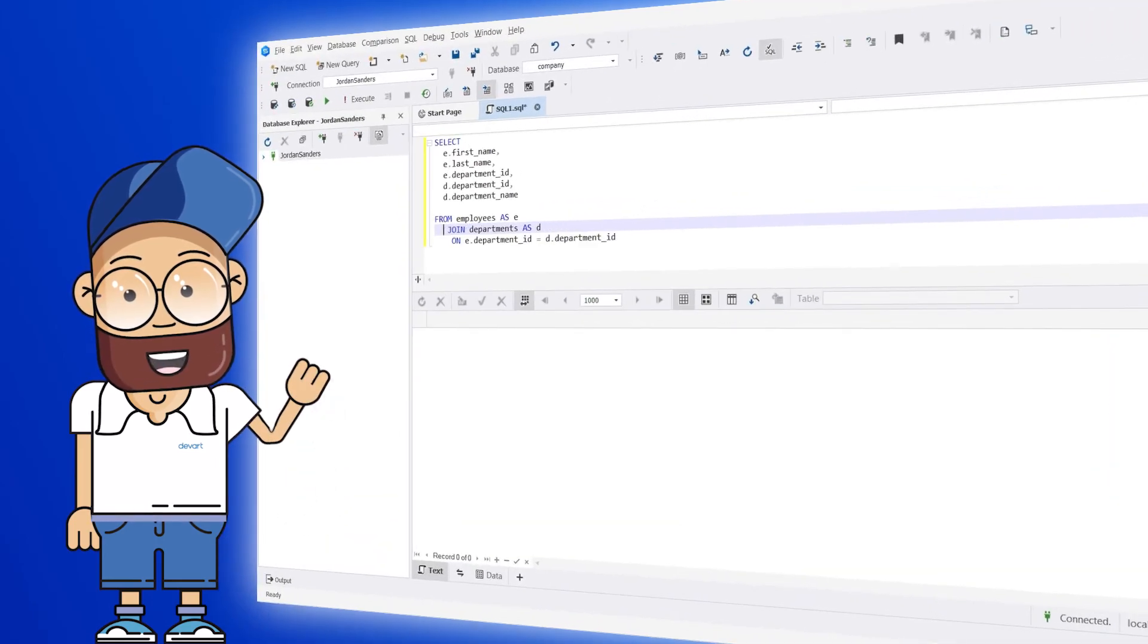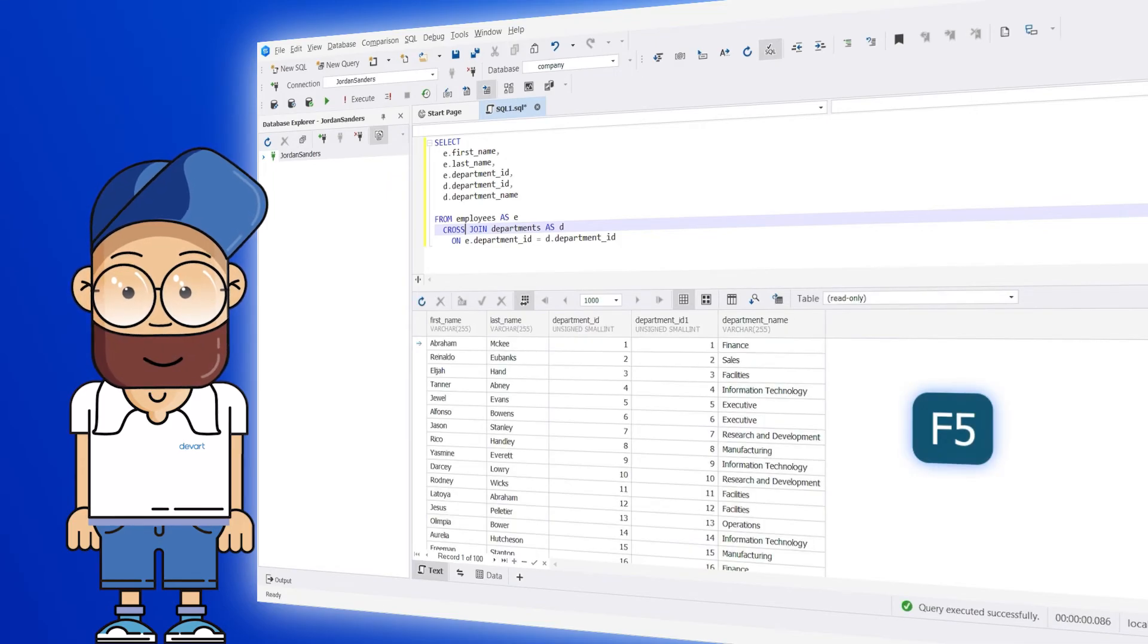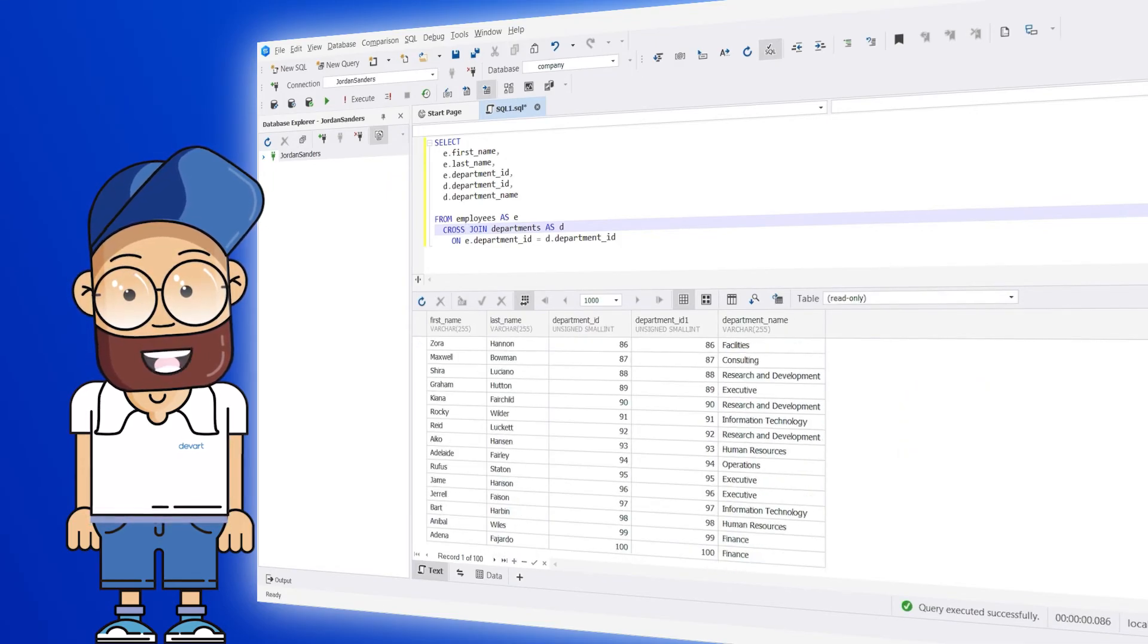To illustrate that, we will use dbForge Studio for Postgres to create a query to select data from two tables. Now we run the query to check the result.